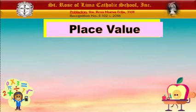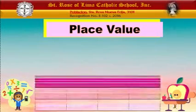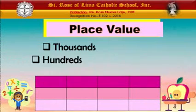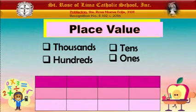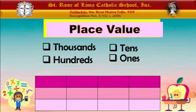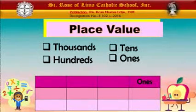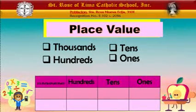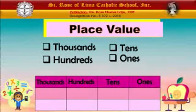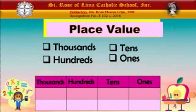Today, in Place Value, we are going to talk about the 4 place values, and these are the 1,000s, 100s, 10s, and the 1s. We are going to write them on our Place Value Chart. We will write 1s at the last column. After the 1s, we will write the 10s. Next is the 100s, and next is the 1,000s. That is how we place the values in our Place Value Chart.